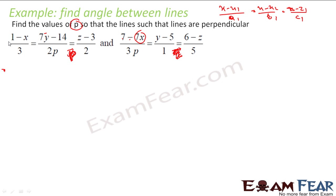So this has to be x minus x1. So I will make it x minus 1 by minus 3. This is x minus x1 now. This is y minus y1. So I will make it y minus 14 by 7 that is 2 by 2p. I divide everything by 7. So I got this equation.